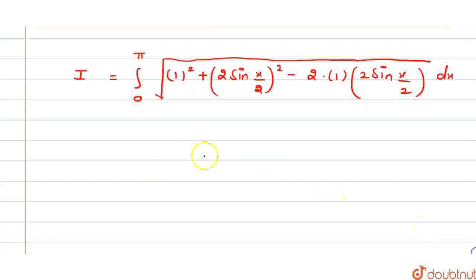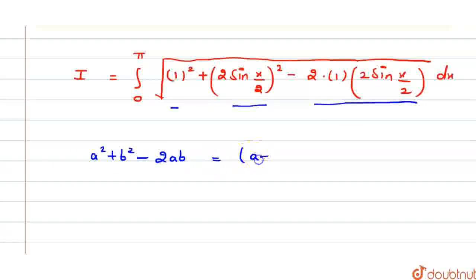Here we can see that this is a² + b² - 2ab form. We know that a² + b² - 2ab equals (a - b)². So by using this identity,